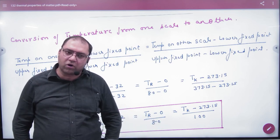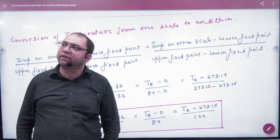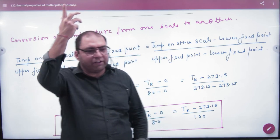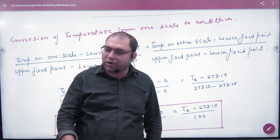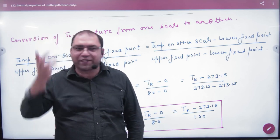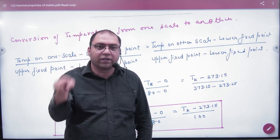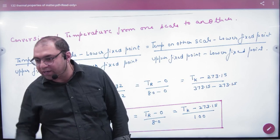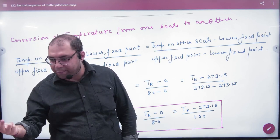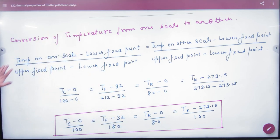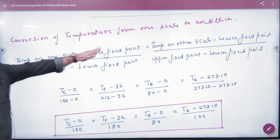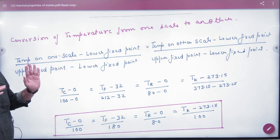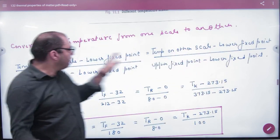Now consider a third scale where water boils at 120 degrees and a body's temperature is 70 on that scale. To understand such conversions, we use a standard formula: temperature on one scale minus lower fixed point, divided by upper fixed point minus lower fixed point, equals temperature on other scale minus lower fixed point divided by upper minus lower fixed point.